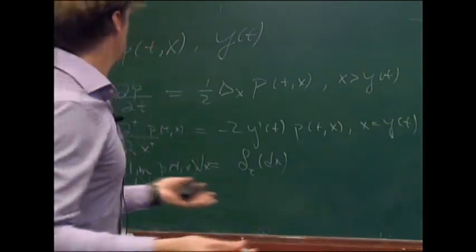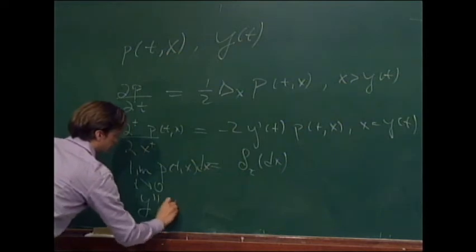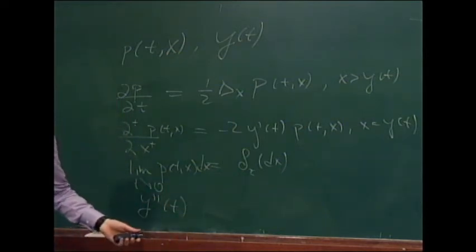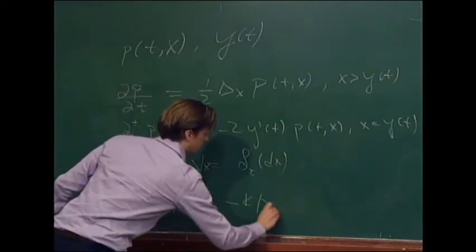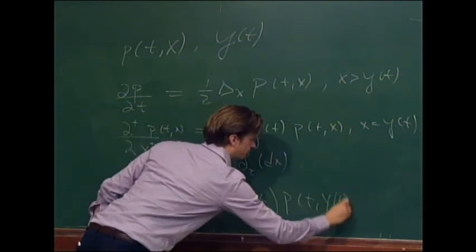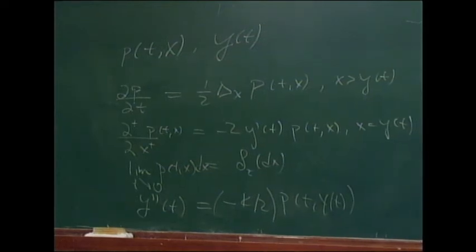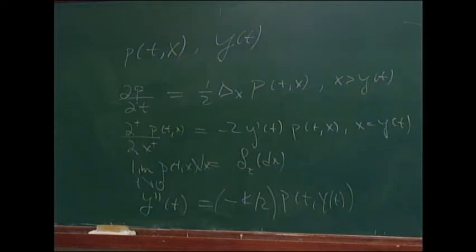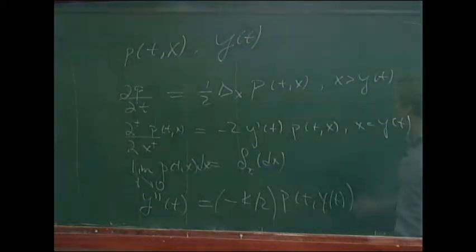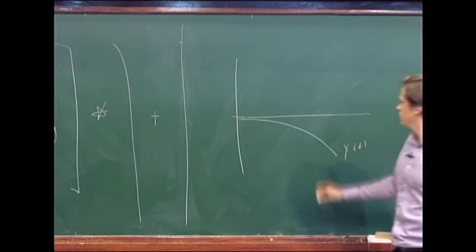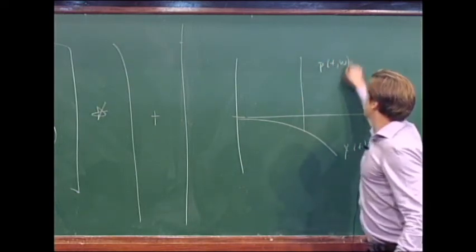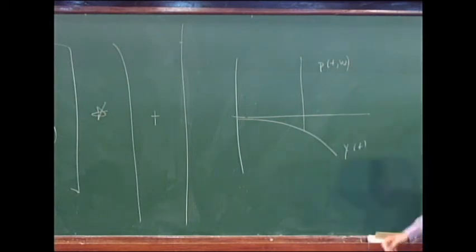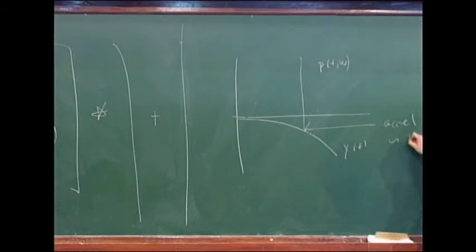We're going to add a condition on y now. The condition on y is that its second derivative is proportional to its temperature. Essentially, if here's y(t) — my insulating barrier — and at a given time I have my temperature distribution p, then y(t) moves in the sense that its acceleration is proportional to its temperature.